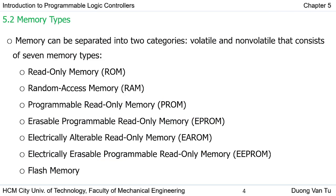Memory can be separated into two categories: volatile and non-volatile. The difference is: if you have a memory that contains data and you disconnect the power, all data in the memory is lost — that is called volatile memory. The other type is called non-volatile. There are seven memory types, which we will consider one by one.